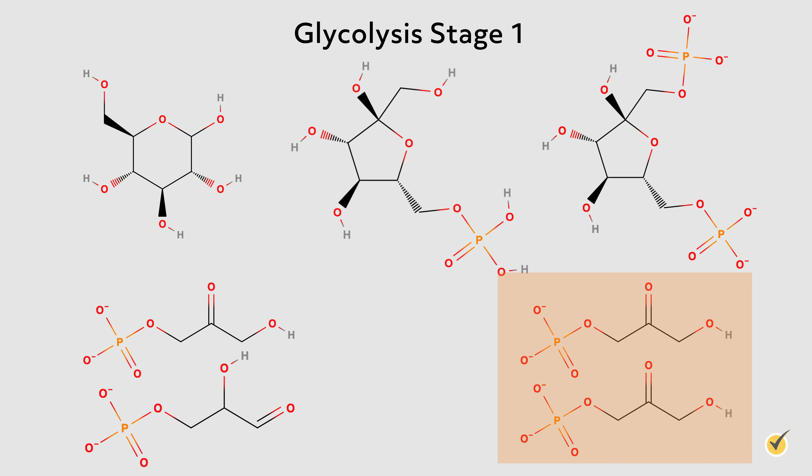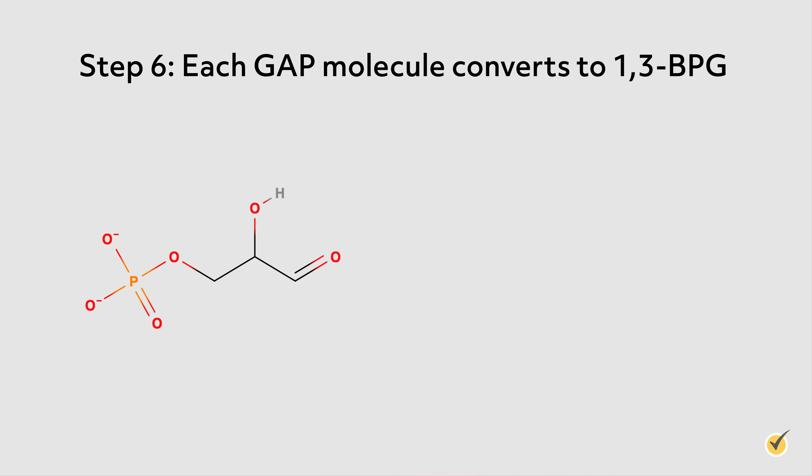We started with one molecule of glucose and ended up with two molecules of GAP, which is our three-carbon precursor for the second stage. During the first stage, we didn't generate any ATP, but instead used two molecules of ATP for the phosphorylation steps. The goal of the second stage is to convert our two GAP molecules into pyruvate through a series of oxidative phosphorylation. To keep things simple, we'll go through the second stage with one GAP molecule at a time.